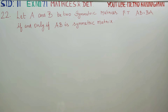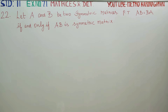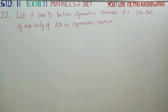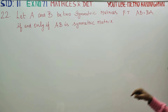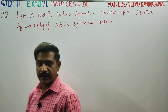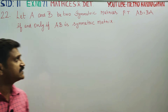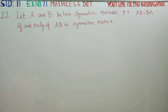Dear Learn Standard students, in exercise number 7.1, sum number 22, let A and B be two symmetric matrices. You have to prove that AB is equal to BA if and only if AB is a symmetric matrix.